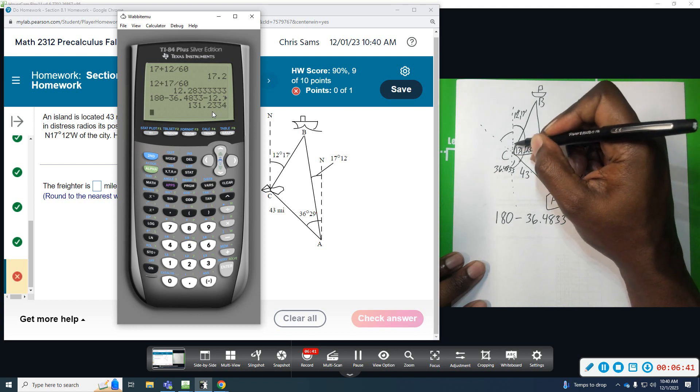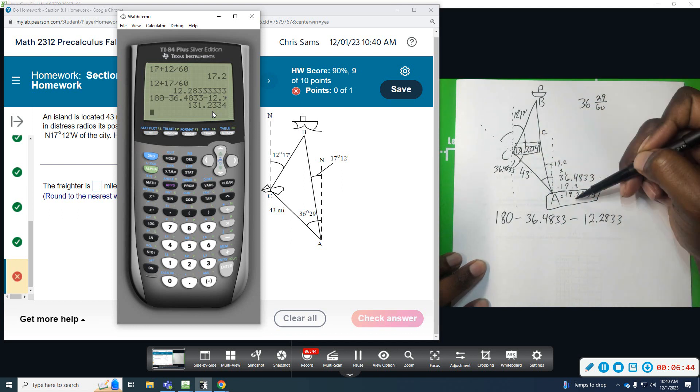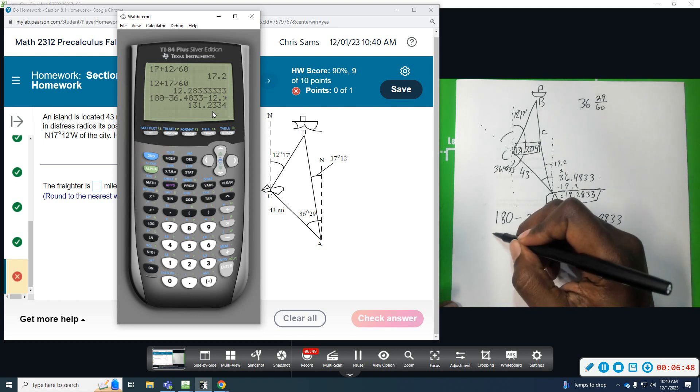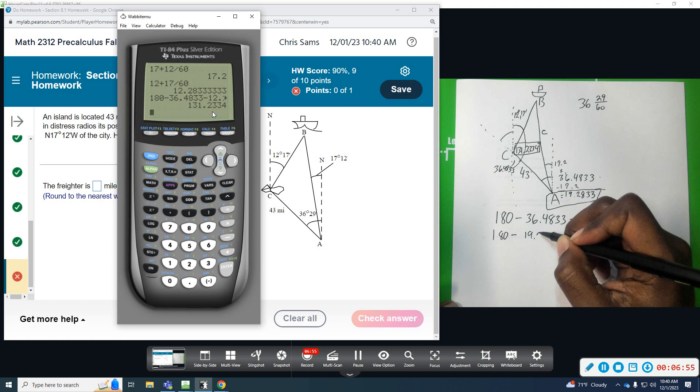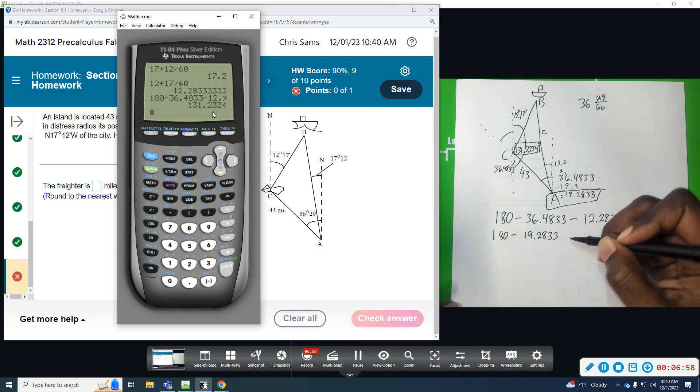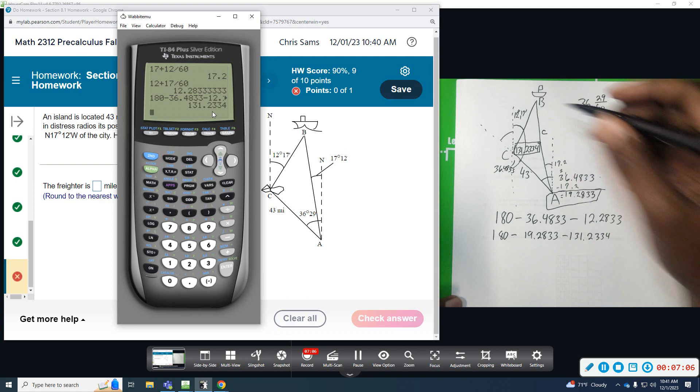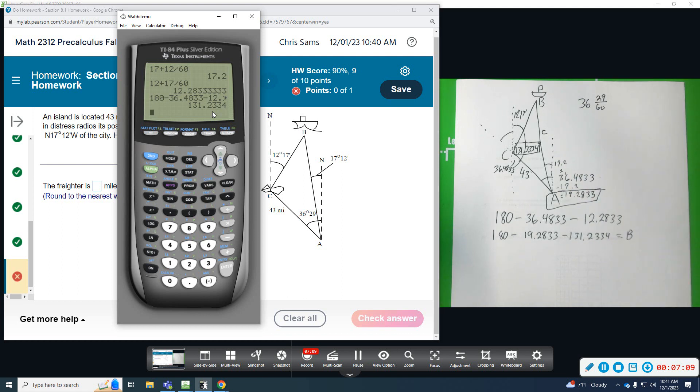Okay, so now that I have two of the three angles, I can use these two, subtract from 180, and figure out B. That's what I really need. So I'm going to do 180 minus the 19.2833, and then minus the 131.2334, and that will give me angle B. So let's figure out angle B. 180 minus the 19.2833 minus the 131.2334 gives me angle B as 29.4833.